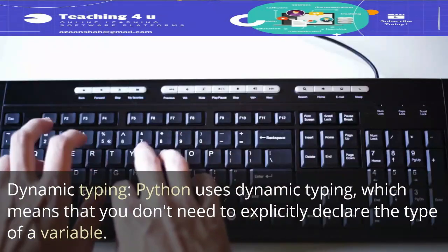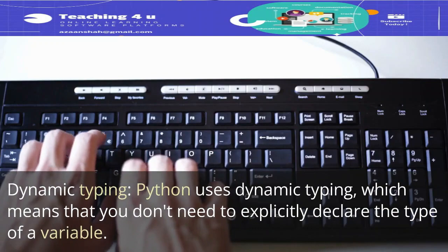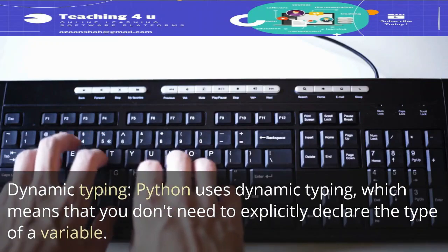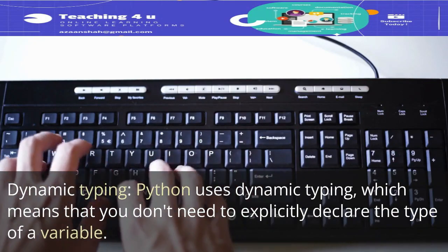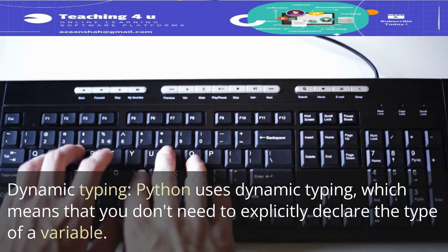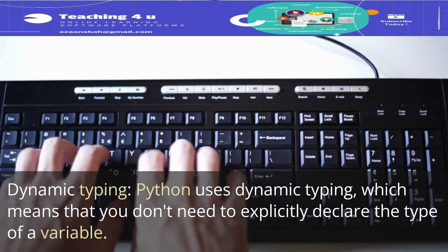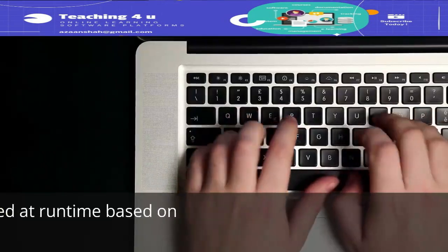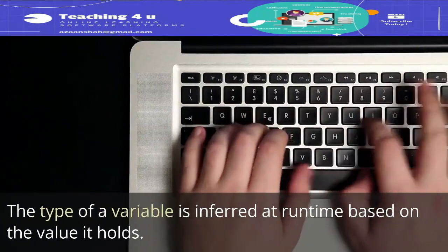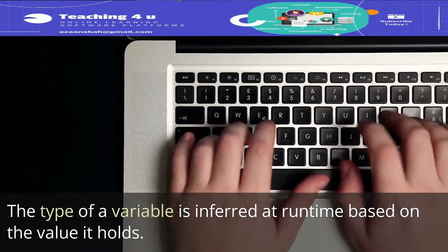Dynamic Typing: Python uses dynamic typing, which means that you don't need to explicitly declare the type of a variable. The type of a variable is inferred at runtime based on the value it holds.